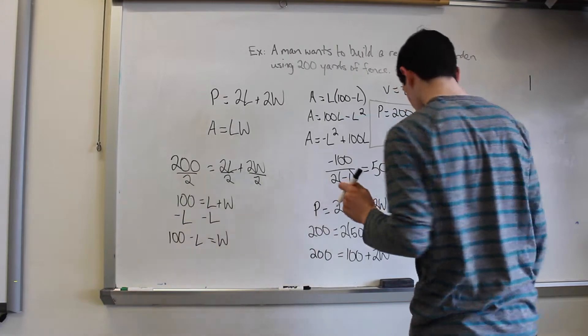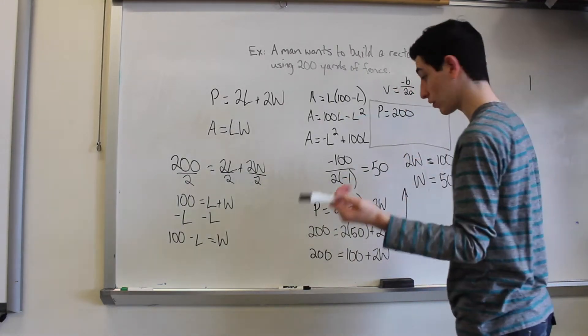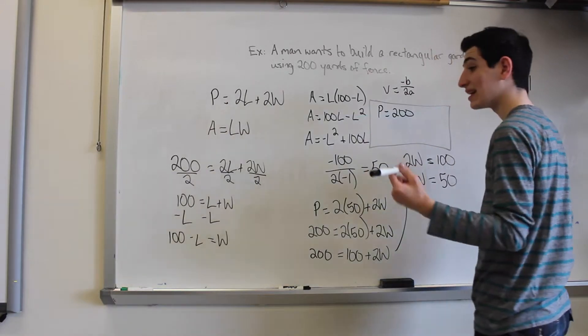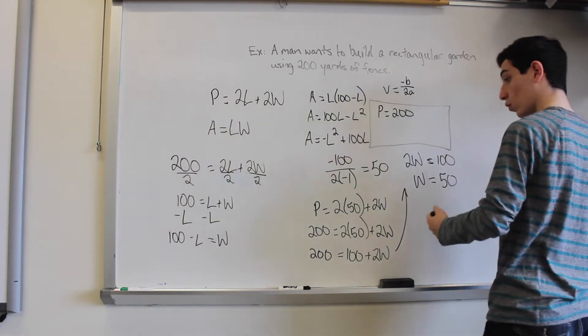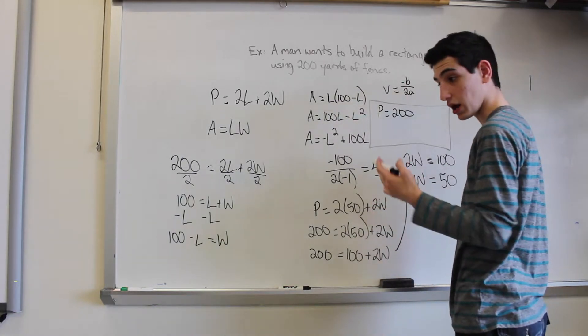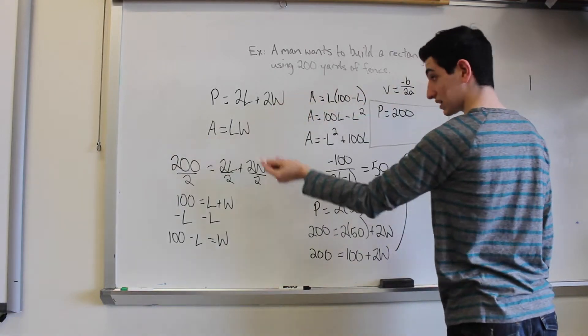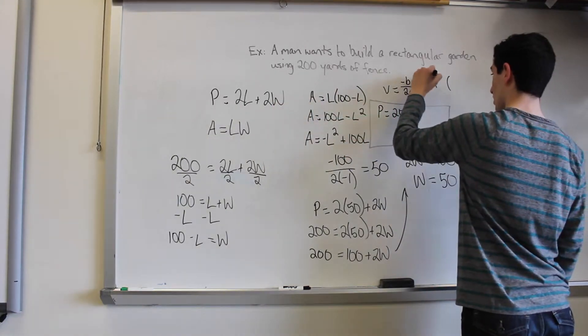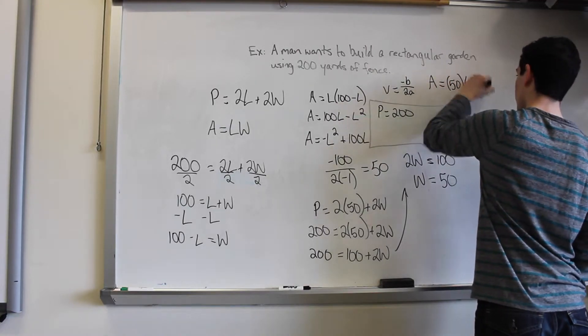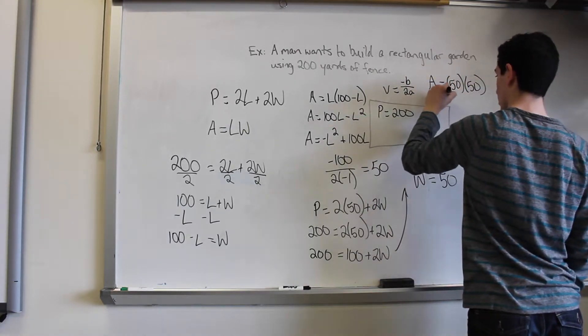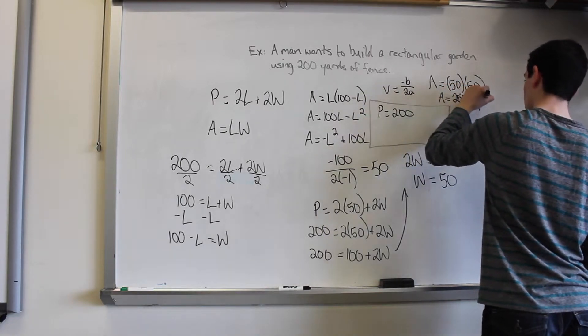But we're not done yet. What we found now is just the dimensions of the length and the width. What we're still trying to find is our maximum area. So we take what we have as the maximum of two dimensions and we multiply them because we know that area equals length times width. So area equals 50 times 50. So the area would be 2500 yards.